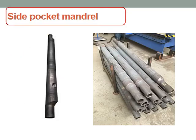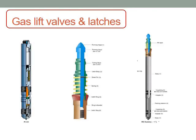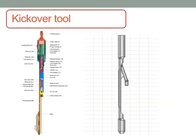Also, gas lift valve change: the side pocket mandrel is an integrated part of the completion that contains a gas lift valve. This gas lift valve is on the left side of the side pocket mandrel. We can retrieve and install the gas lift valve inside the side pocket mandrel using slick line — using a running and pulling tool for gas lift valve change.